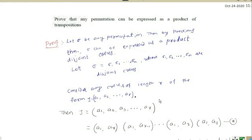Today I will talk about the theorem that any permutation can be expressed as a product of transpositions. We have already seen that every permutation can be expressed as a product of disjoint cycles. Now in this section we will see that every permutation can also be expressed as a product of transpositions.